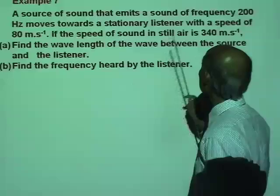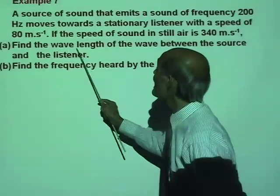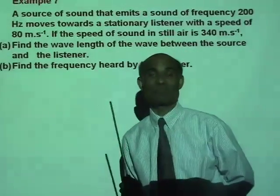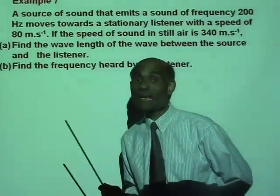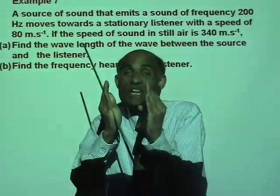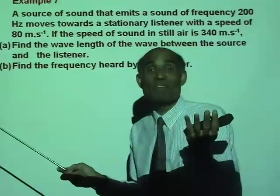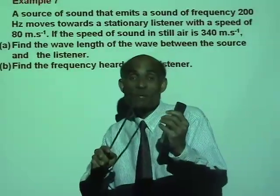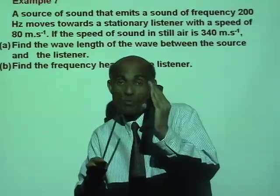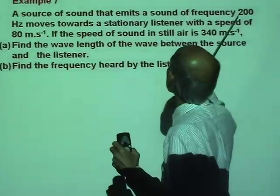If the speed of sound is 340 meters per second, find the wavelength of the wave between the source and the listener. The number of waves will now be squeezed in a region V minus V_s, so the wavelength will be V minus V_s — that is the distance — divided by the number of waves, which is the frequency: 200.